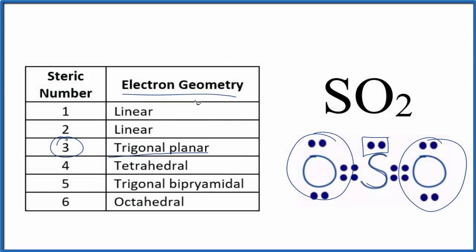Let's go back. So the electron geometry for SO2, trigonal planar.